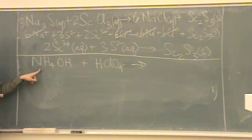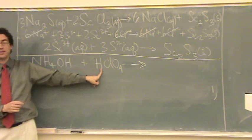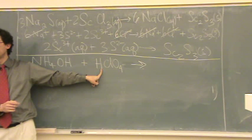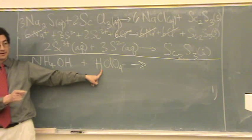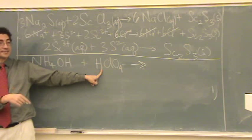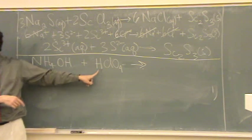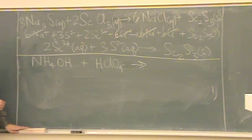Let's do this one now. Ammonium hydroxide plus, what's this called? Perchloric acid. Perchloric acid. No hydro because it's polyatomic.